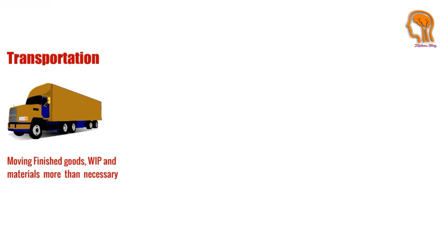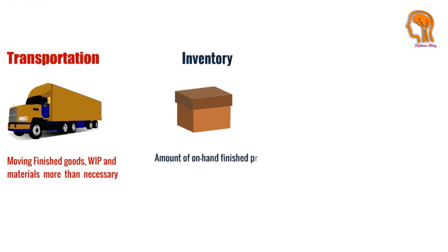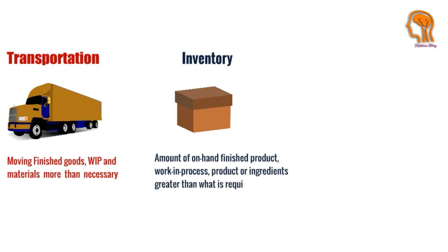Waste number 2 is Inventory. Inventory means the amount of on-hand finished product, work-in-process product, or ingredients greater than what is required by the system or requested by customers. Inventory is considered as frozen money.